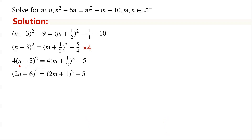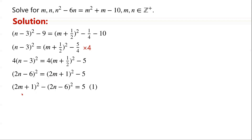So the left-hand side of the equation can be written as (2n minus 6) squared, and the right-hand side can be written as (2m plus 1) squared minus 5. Rearranging, (2n minus 6) squared equals (2m plus 1) squared minus 5. We have a difference of two squares on both sides of the equation.